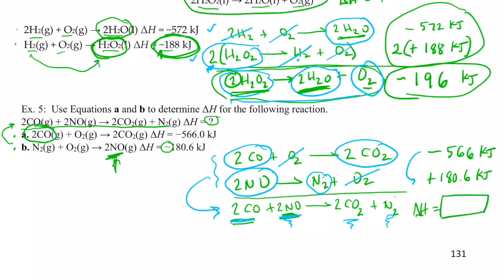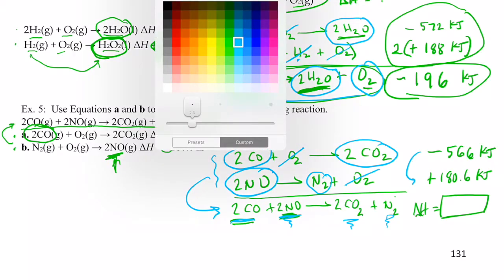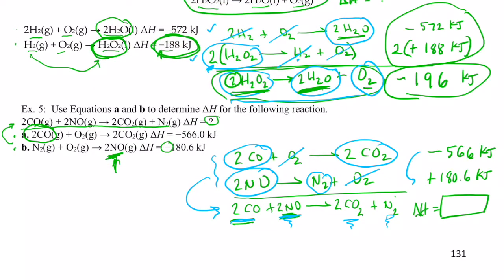So now I can add their heats together to get the heat of that equation that I'm after. So let's see what that turns out to be. We have a negative 566 plus 180.6. And that gives us negative 385.4 kilojoules for that reaction.